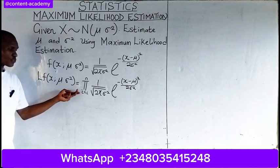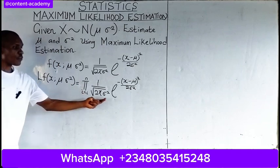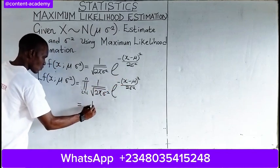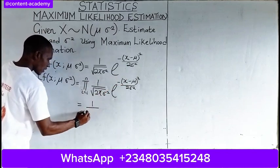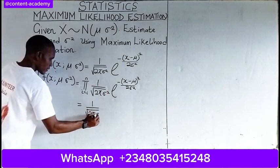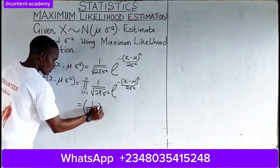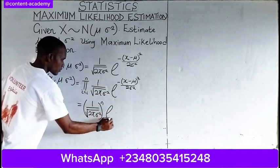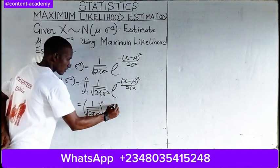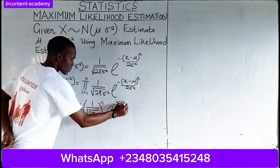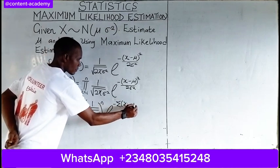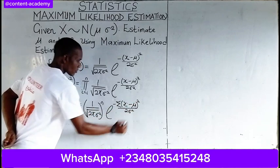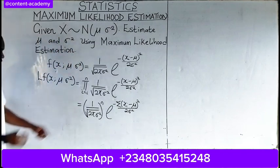The likelihood function, or the product sum of this distribution, can be written as 1 all over (2 pi sigma squared) raised to the power of n over 2, times the exponential of negative summation of (x_i minus mu) squared all over 2 sigma squared. So this is what we get.